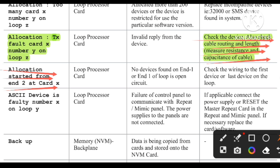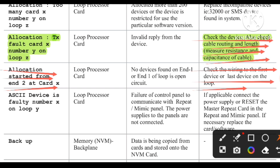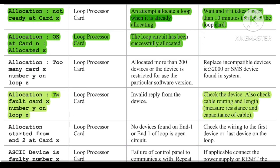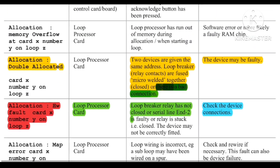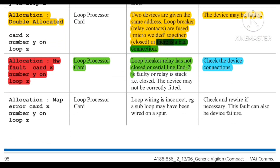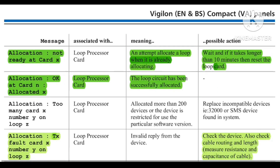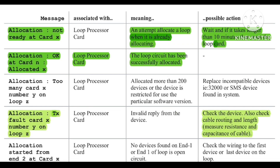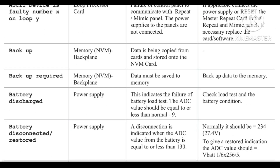If 'Allocation started from end' appears, check the wiring to the first or last device. To summarize, the allocation faults covered are: allocation memory overflow, allocation double allocated, allocation HW fault, allocation map error, allocation not ready at card X, and allocation TX fault — all very common faults in the Gent Vigilon panel.